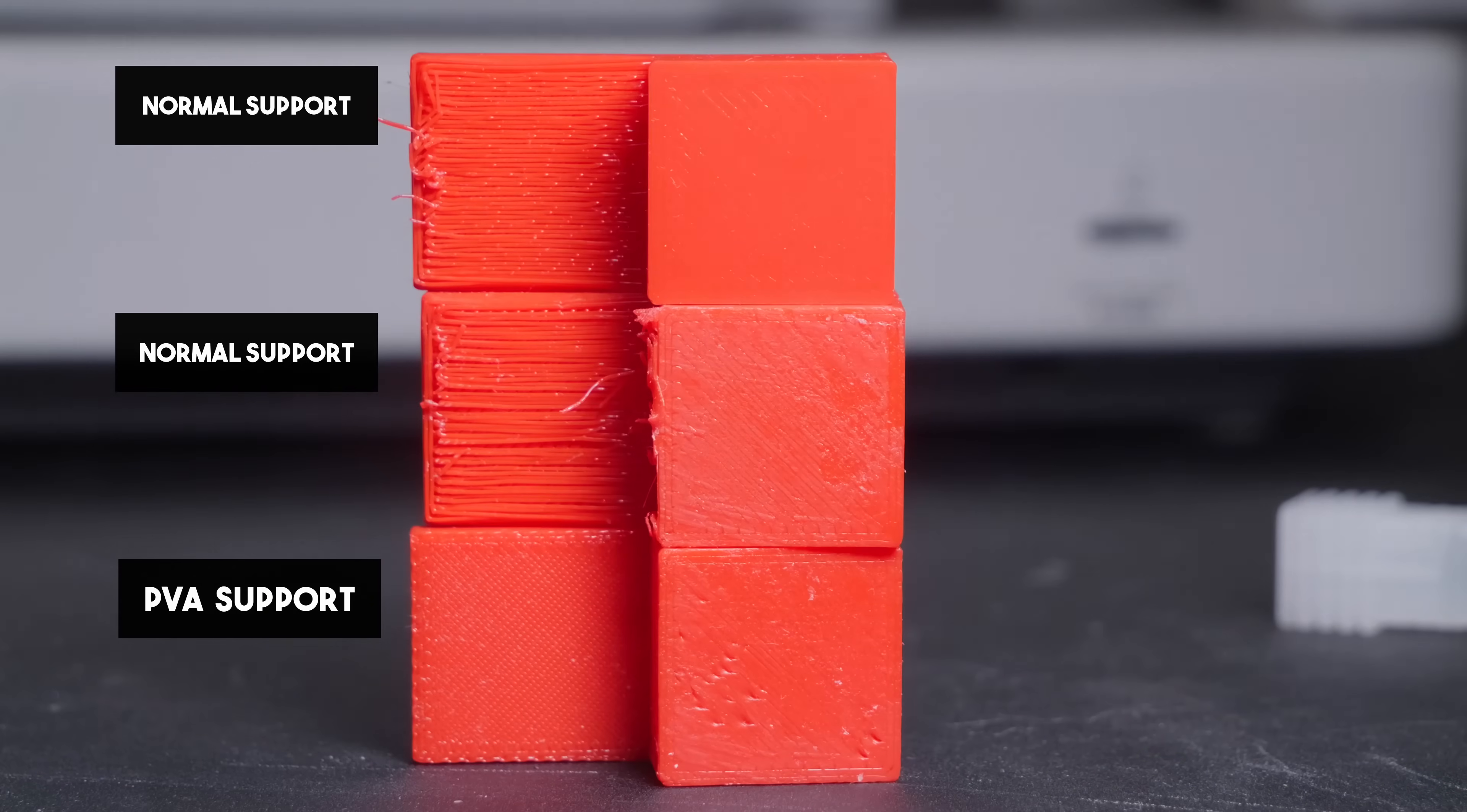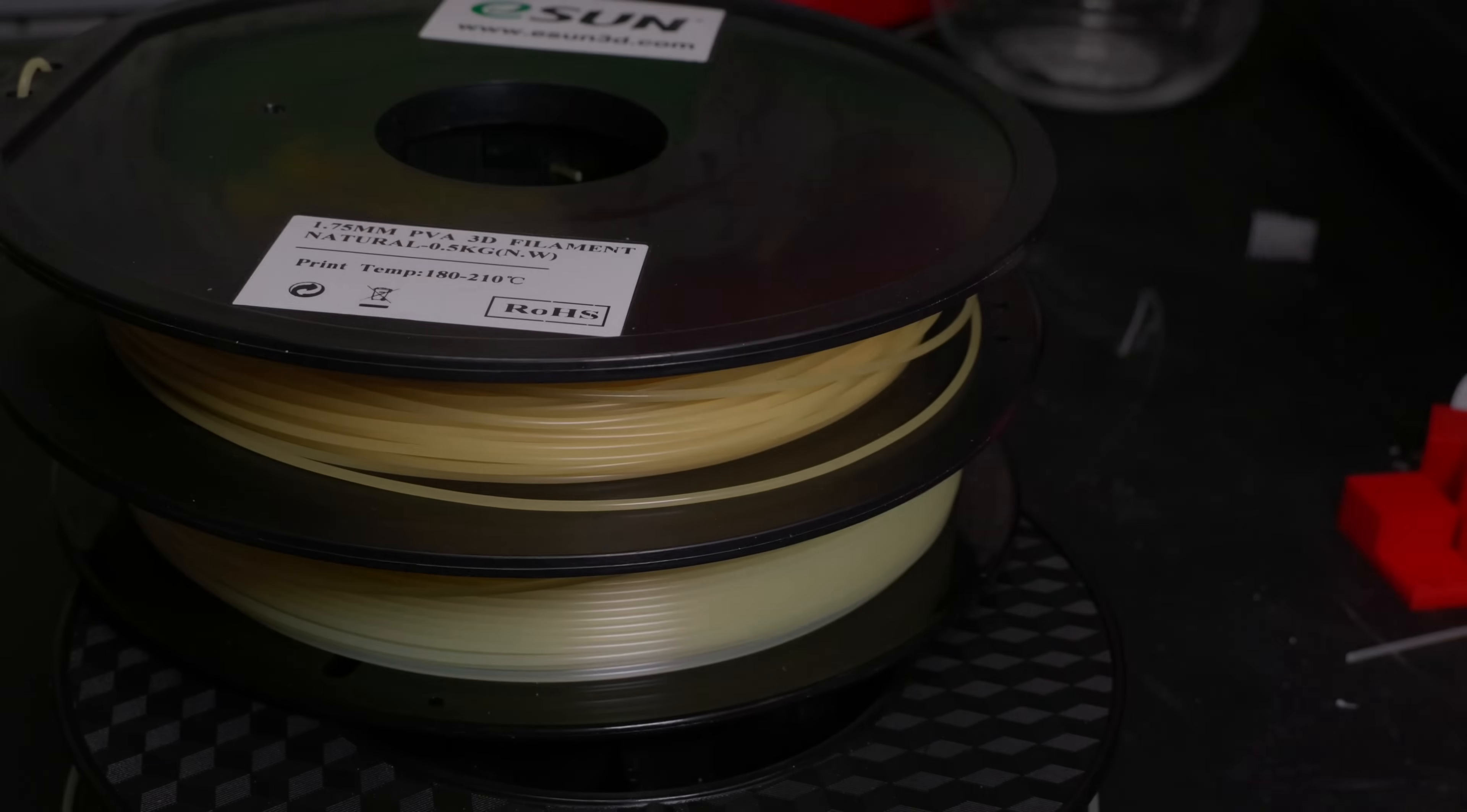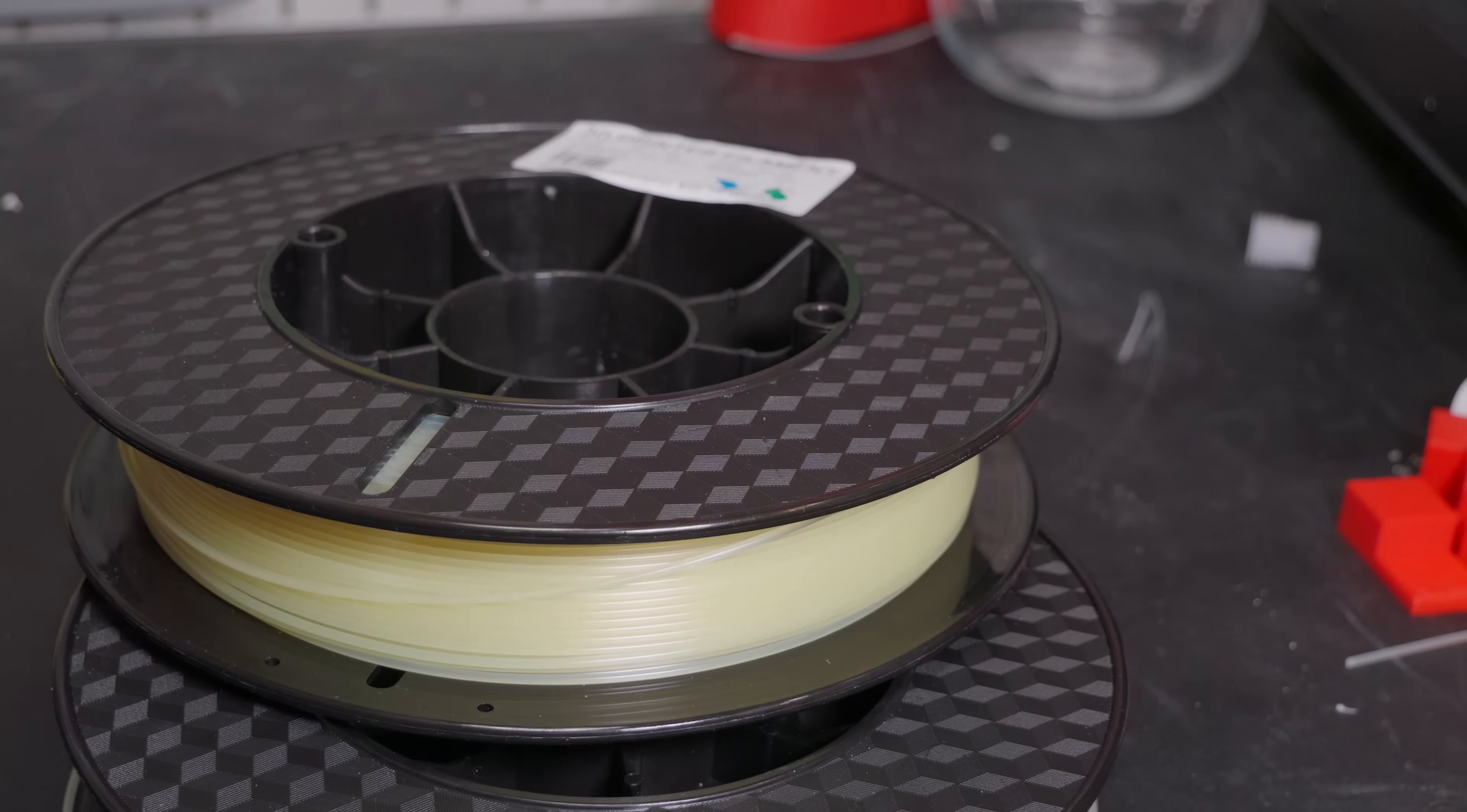So I've got a reel of PVA from a company called RepRapper. I've got a reel from Yusu, which is a slightly better known company. Those two look like they're the same filament if you ask me. A reel from E-Sun and a reel from a company called Reel Filament, with an A. They're based in the Netherlands, and the reason I'm telling you all this is because these are not all the same. In fact, they're not the same at all, except for these two because I think they are actually the same.